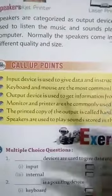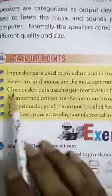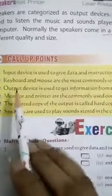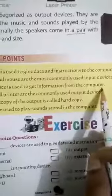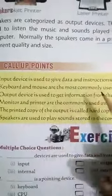Input devices are used to give data and instructions to the computer. Keyboard and mouse are the most commonly used input devices. Output devices are used to get information from the computer. Monitor and printer are the most commonly used output devices.